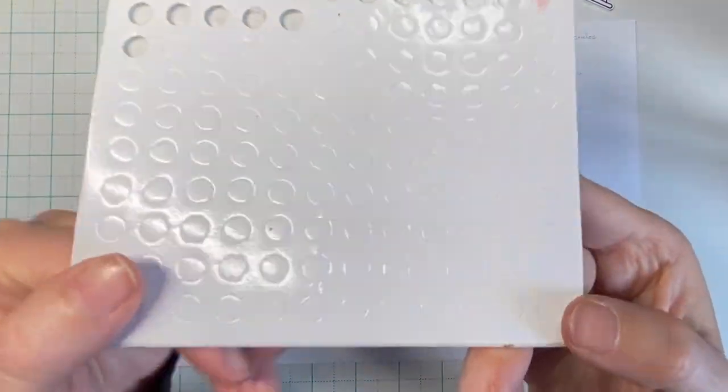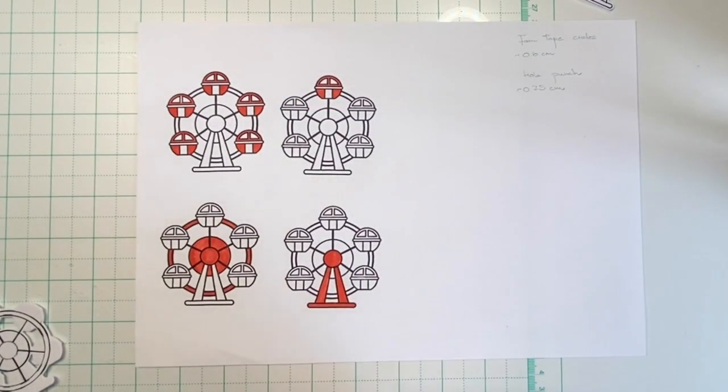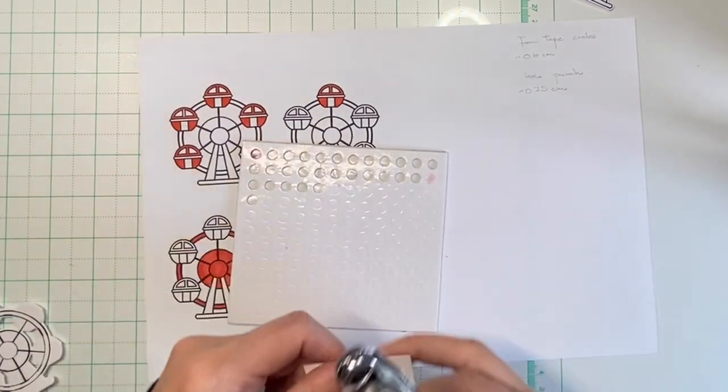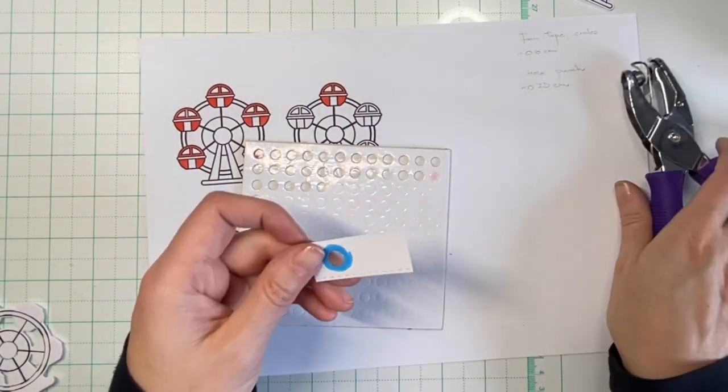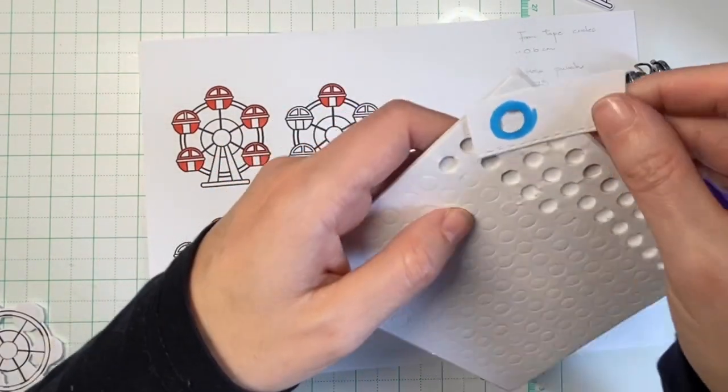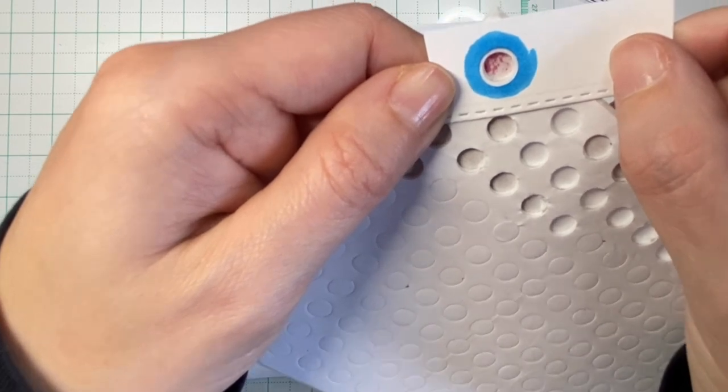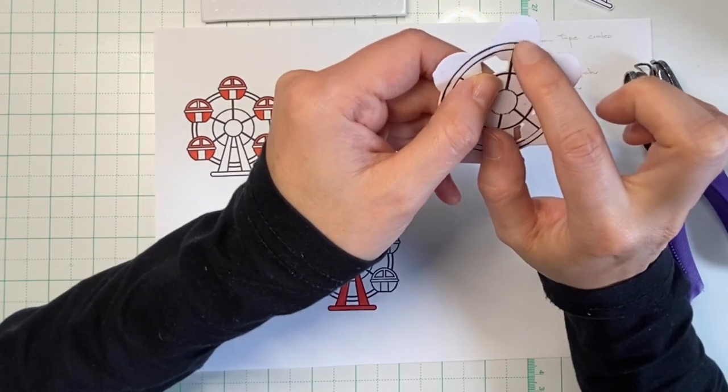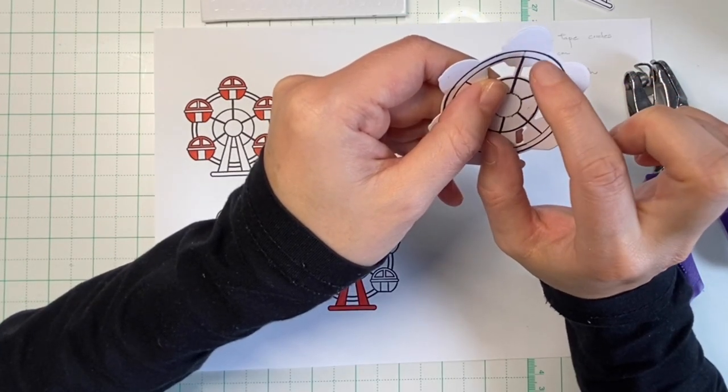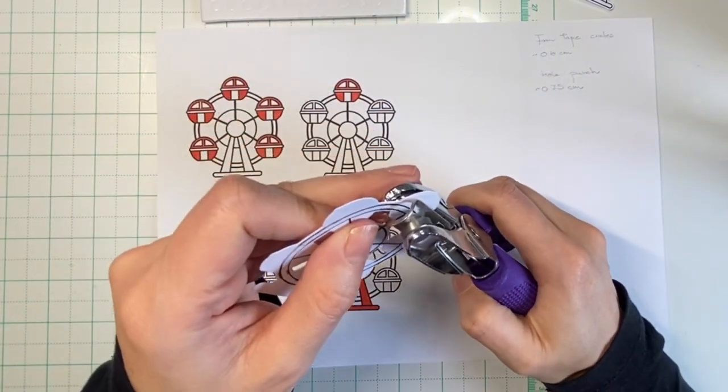To attach our gondolas to the wheel and enable them to freely spin, we need these foam circles, foam dots—at least this is what I used. Additionally, we need a hole punch that cuts a hole that is slightly bigger. I use a very cheap hole punch because it has a perfect size. As you can see, the hole it cuts is just slightly bigger than this foam circle. With this hole punch, we will need to cut holes in the wheel piece at the spots where the connector meets the wheel.